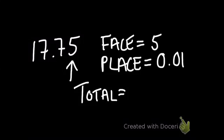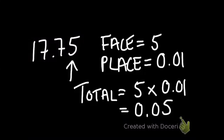And to find the total value, once again, we multiply the face value times the place value. And in our case, the answer is 0.05, or 5 hundredths.